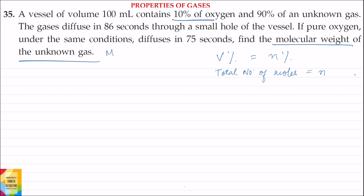So, 10% of oxygen — mole percent of oxygen is 10%. Out of 100 moles, 10 moles is oxygen. So, out of N moles, the number of moles of oxygen will be 10/100 into N, that is 0.1N moles of oxygen.